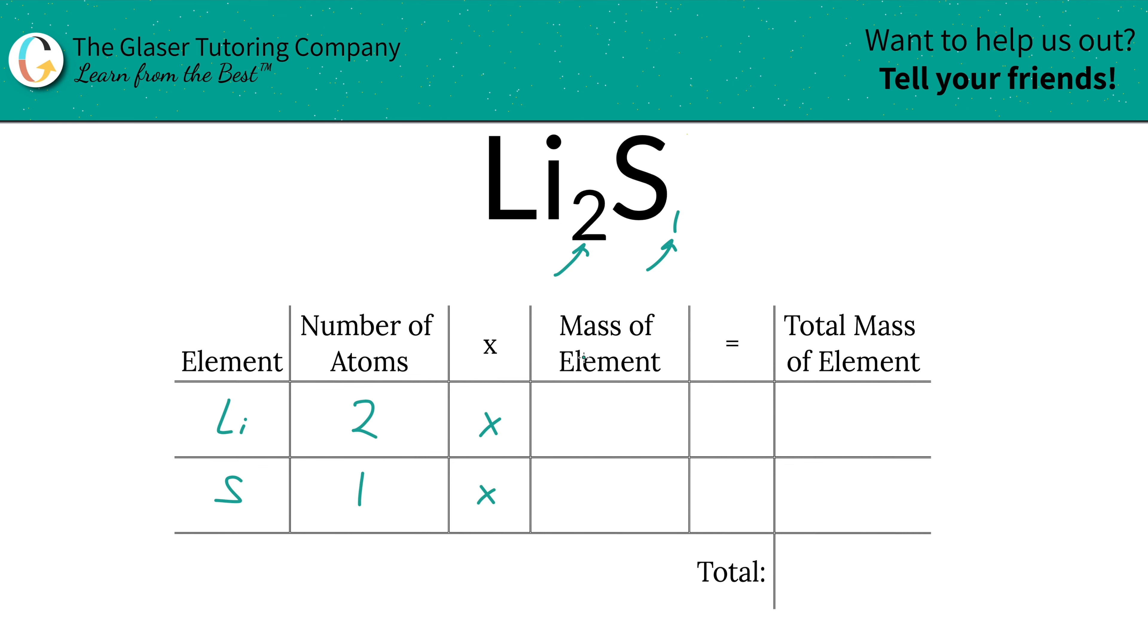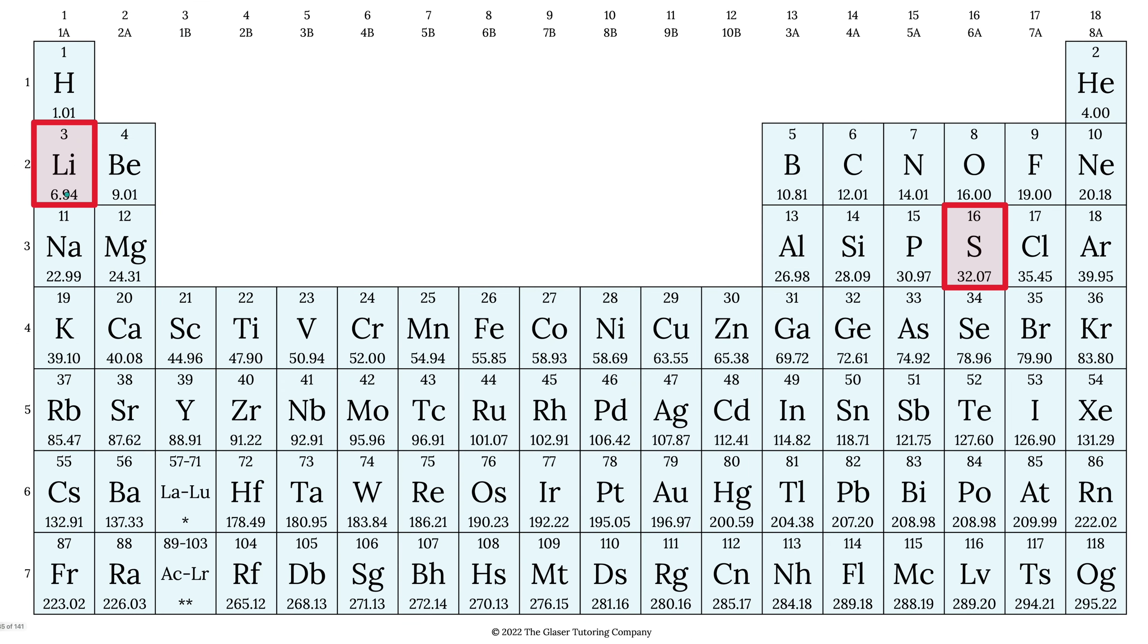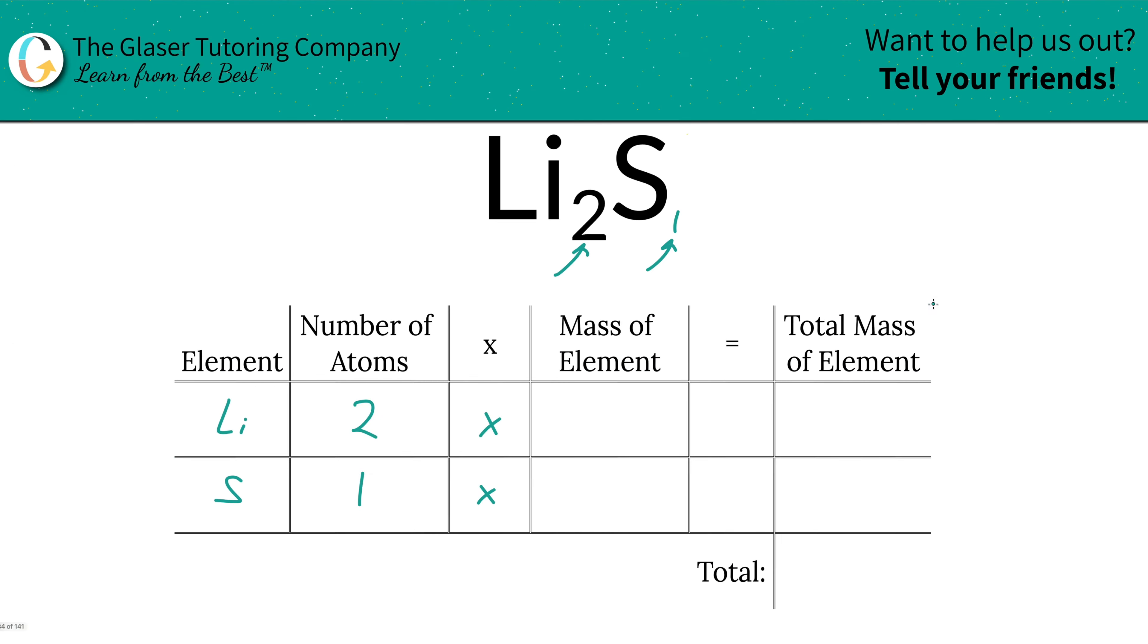Then we're going to take both of those numbers and multiply by the mass of each individual element. So we're going to go to the periodic table. Lithium is 6.94, sulfur is 32.07. So 6.94 for lithium, 32.07 for sulfur.